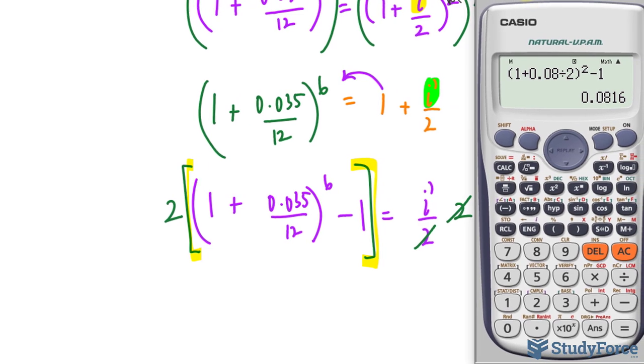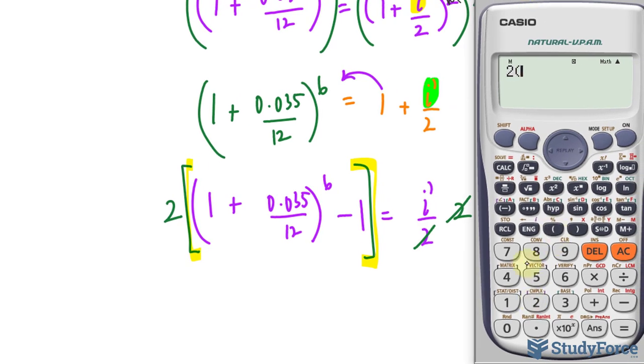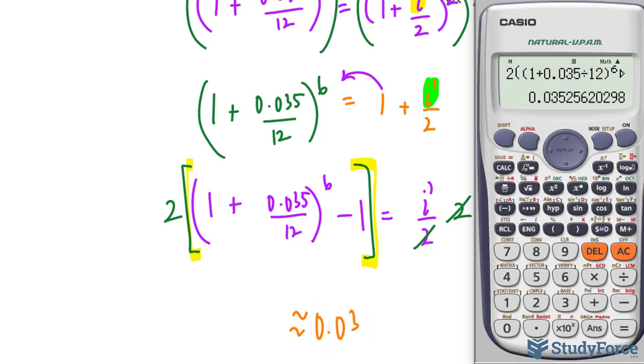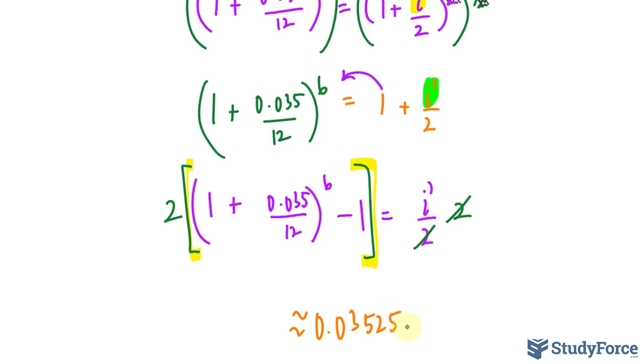So on your calculator, you'll write down 2 open parentheses. That's the green one. Open again. That's the purple one. 1 plus 0.035 divided by 12. Close. Right. We just close that one. Raise to the power of 6. Minus 1. Close. And we end up getting a new interest rate that is now compounded semi-annually being roughly 0.03525. Multiplying this by 100%, we end up getting 3.525 as our percentage.